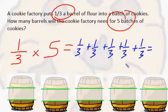As long as our denominators are the same, they will stay the same. We're going to add our numerators: one, two, three, four, five. So that's five thirds.